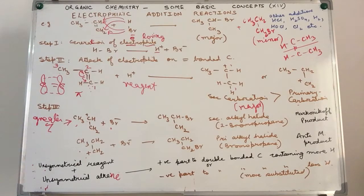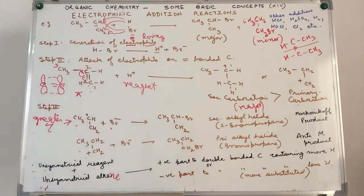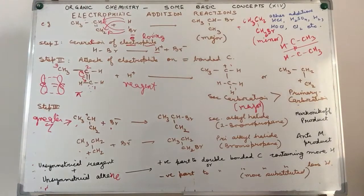It can also be spelled M-A-R-K-O-N-I-K-O-F. Markovnikov or Markovnikov both refer to the same rule, named after a Russian scientist. Markovnikov's rule is very important and helps you decide what will be your major product in an addition reaction.